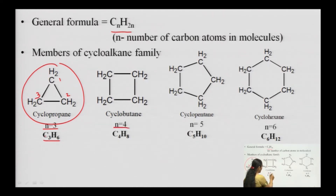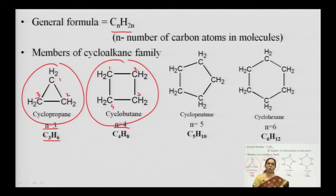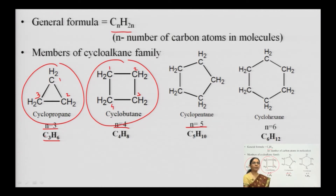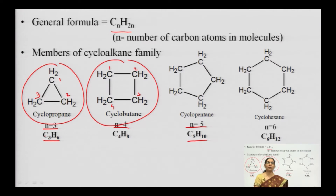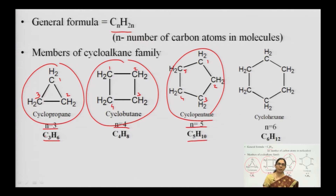On similar grounds, if n = 4, the formula comes out to be C₄H₈. This closed cyclic ring structure with 4 carbon atoms is cyclobutane. Similarly, if n = 5, the formula is C₅H₁₀. A closed ring structure having 5 carbon atoms, all joined through single bonds and hence saturated, is cyclopentane.